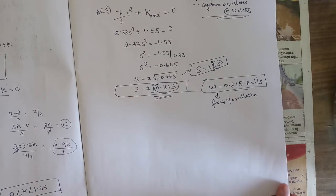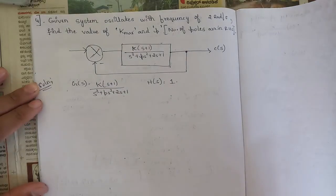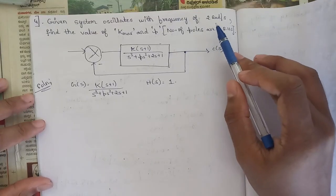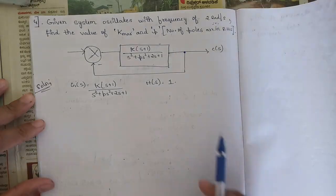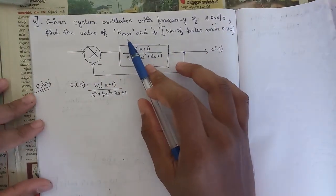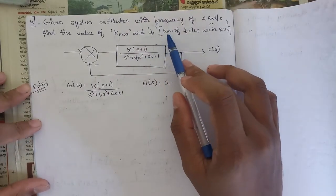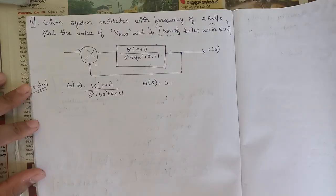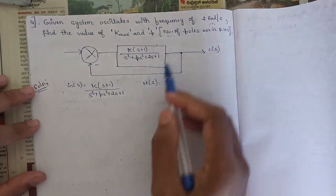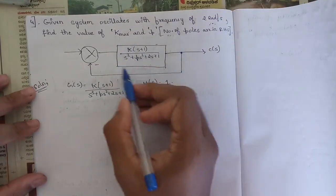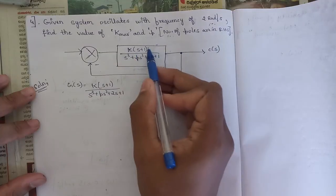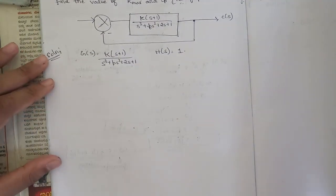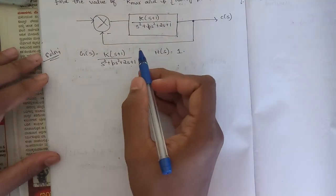Now for the next problem: the system oscillates at a given frequency of 2 radians per second. We need to find the marginal value of k and the value of p. The open-loop transfer function is G(s) = k(s+1)/(s³+ps²+2s+1) with unity feedback H(s)=1.